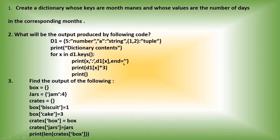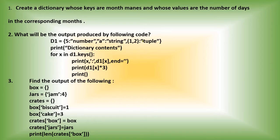After that, one more print statement: d1[x] * 3. We already found that d1[x] is 'number'. The asterisk is the replication operator when used with a string, which we already studied. So 'number' * 3 means 'number' will be displayed three times. After that there is an empty print statement — nothing is mentioned inside the bracket — so the cursor will move to the next line.